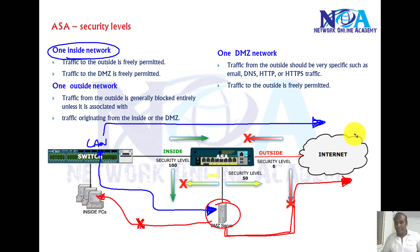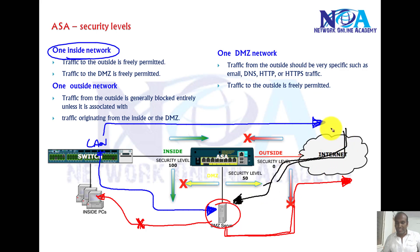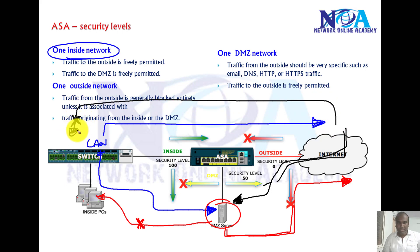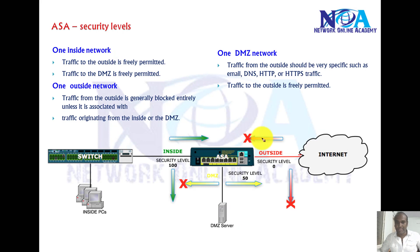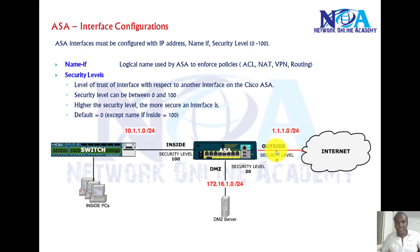At the same time, users on the internet may want to access the company web server or FTP server in the DMZ. However, internet users should not be able to access anything in the LAN. These are the typical requirements, though they can vary depending on what you want. Based on these requirements, we configure security policies. Configuring all these policies manually on the ASA would require a lot of configuration, so the ASA has predefined security levels.